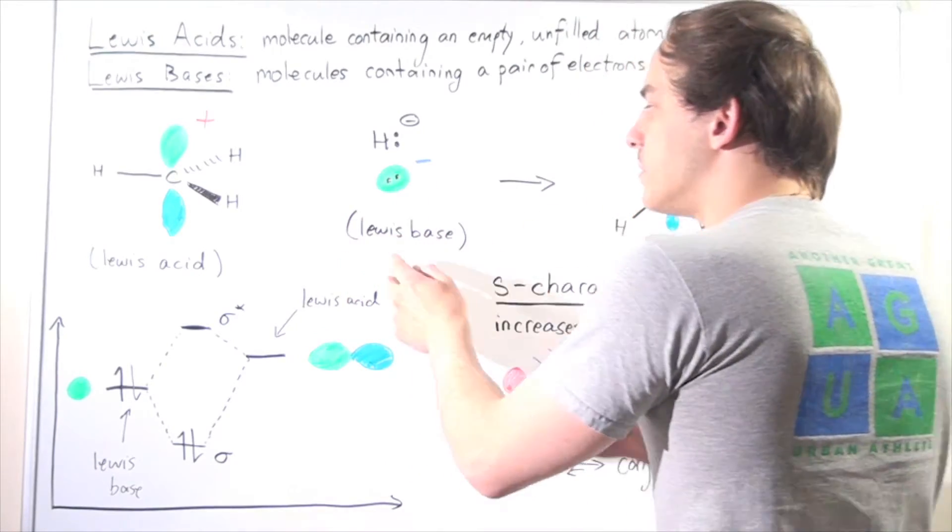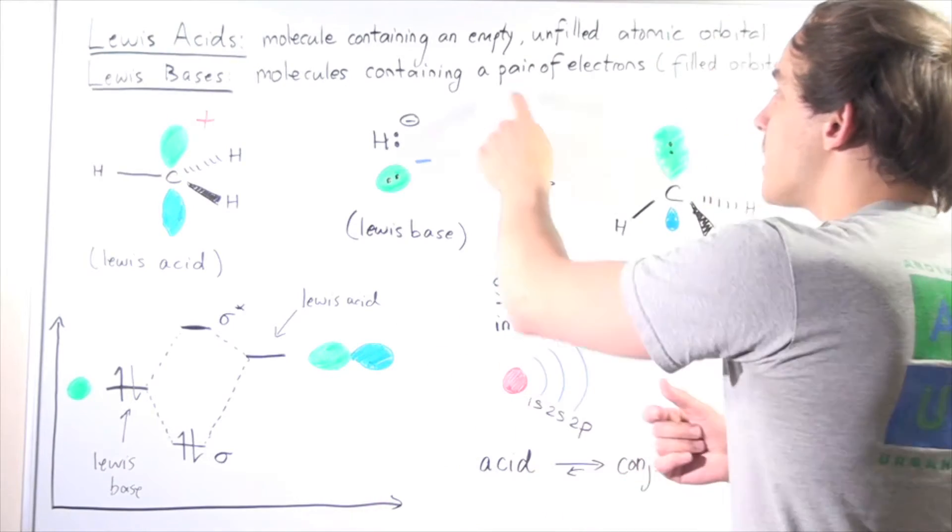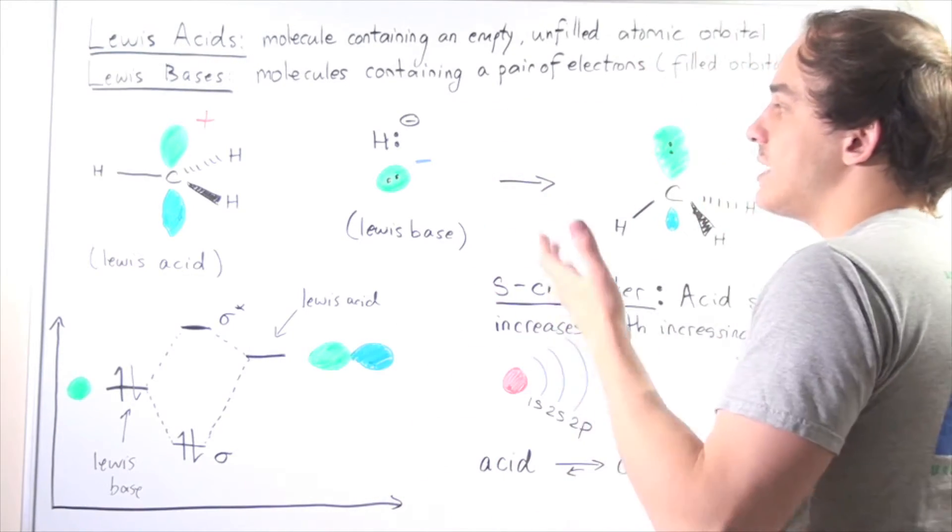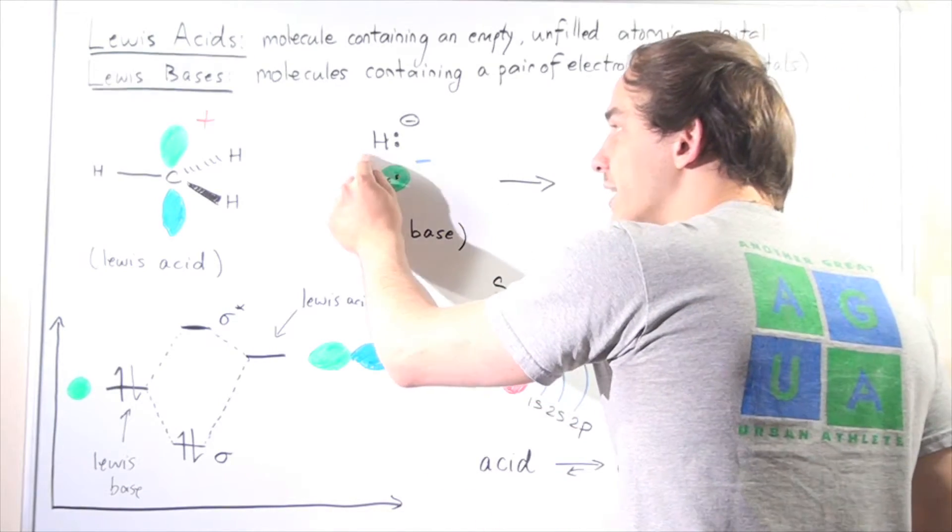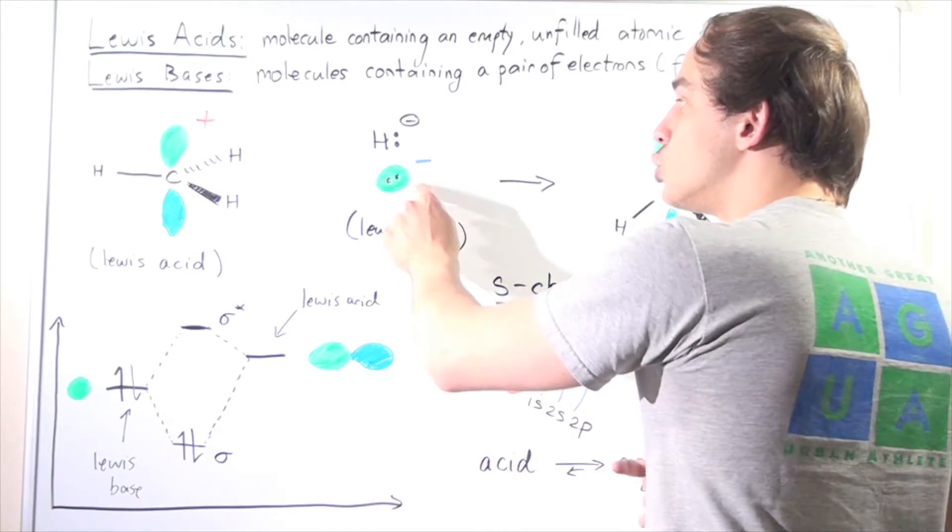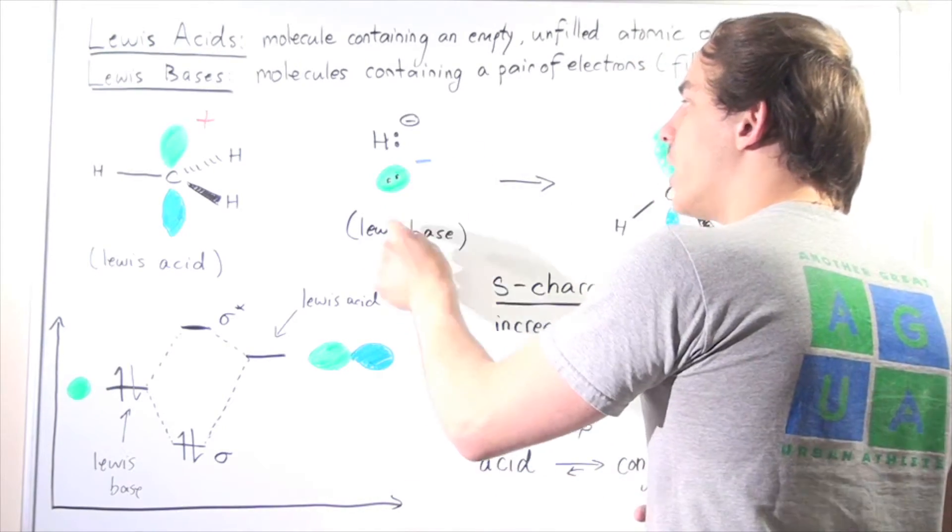Here's an example of a Lewis base. A Lewis base is a molecule containing a pair of electrons, a pair of non-bonding electrons in an orbital. Hydride is an example of a Lewis base because it has two electrons, a pair of non-bonding electrons within the 1s orbital.